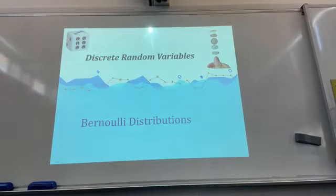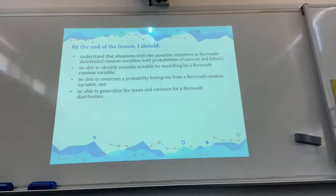You should, by the end of the lesson, understand the situation with two possible outcomes as Bernoulli distributed random variables with probability of success and failure only. So either it's yes or no, failure or pass or success, on or off, that sort of stuff. Only two possible outcomes, cannot be three, cannot be four.